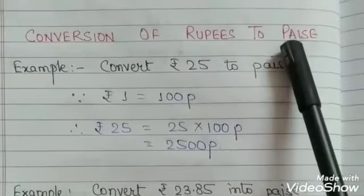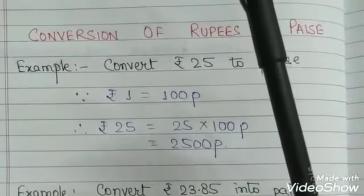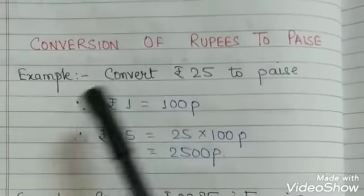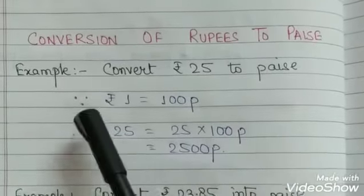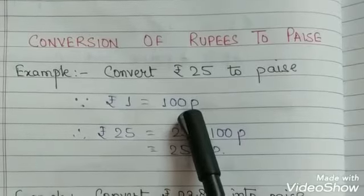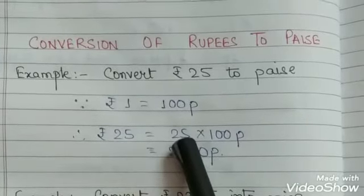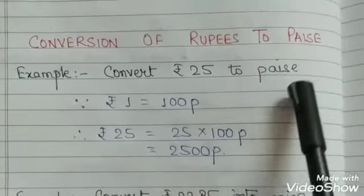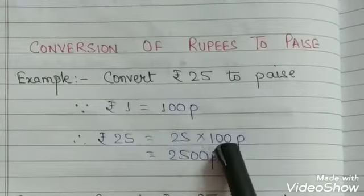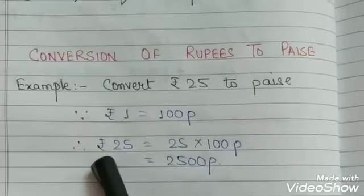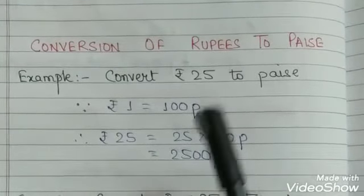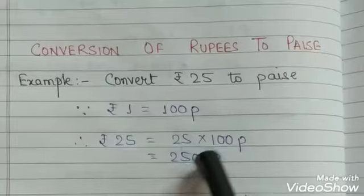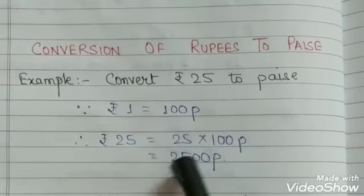Conversion of rupees to paise: we know that one rupee equals 100 paise. To convert ₹25 to paise, since ₹1 = 100 paise, ₹25 = 25 × 100 = 2500 paise. We simply multiply the given amount by 100 and remove the rupees symbol, giving the answer in paise.